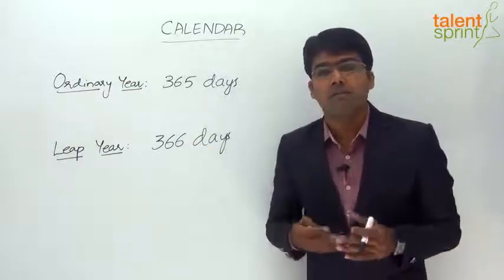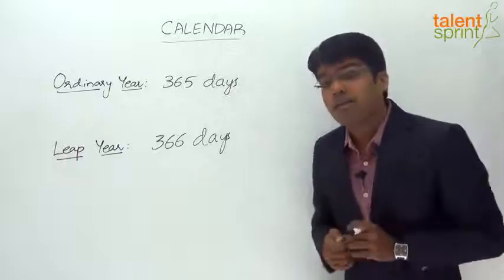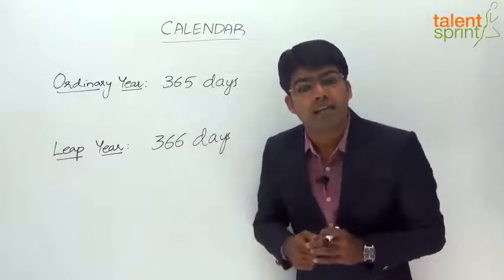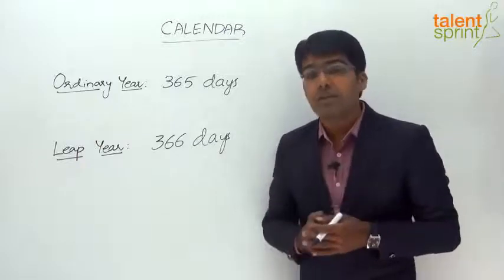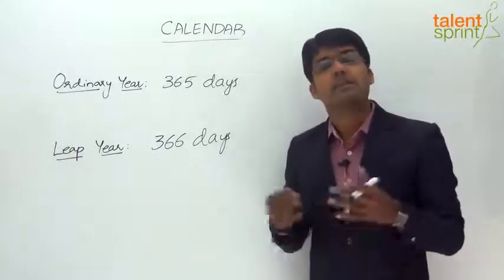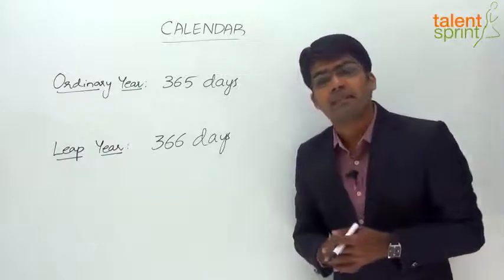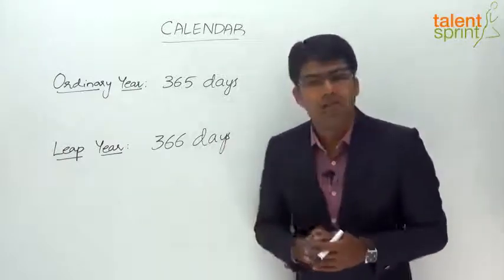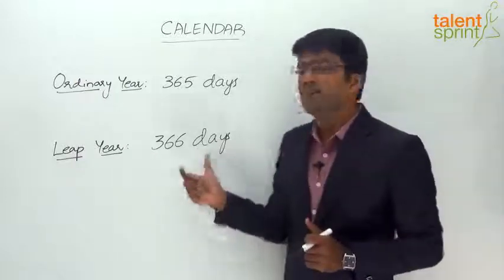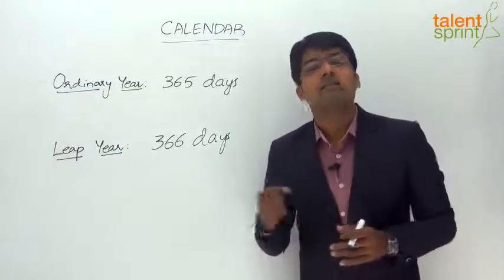In a leap year, which occurs every four years, we have one extra day, which results from four quarter days accumulating over those four years. If we do not account for this additional day every four years, we would lose 6 hours from our calendar every year — about 24 days in 100 years. So to keep our calendar aligned with the Earth's revolution, we have a leap year with one extra day every four years.